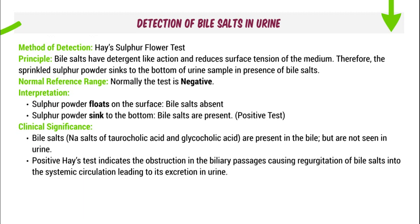Detection of bile salts in urine: Hay's sulfur flower test, done in practical classes. Principle: bile salts have a detergent-like reaction and reduce the surface tension of the medium. When surface tension is reduced, sulfur flower powder sprinkled on the urine surface sinks to the bottom in the presence of bile salts. Normally the test is negative — sulfur powder floats. If positive, bile salts (sodium salts of taurocholic and glycocholic acids) are present due to obstruction of the biliary passage, causing regurgitation into systemic circulation and excretion in urine.